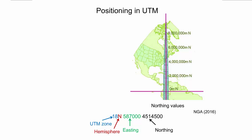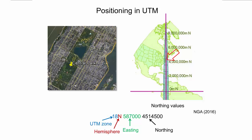The provided combination of numbers and letters on the bottom is an example of a complete point description in UTM zone 18. It consists of UTM zone, hemisphere — where N stands for northern hemisphere — as well as easting and northing coordinates. The approximate location of this point is indicated by the red arrow to the right. More specifically, this point is located in Central Park in New York City.